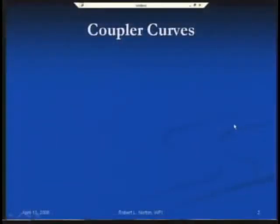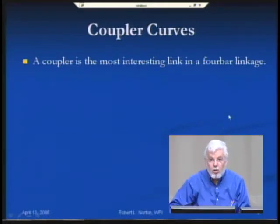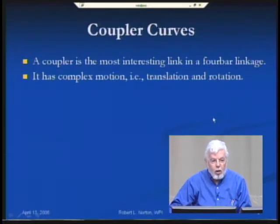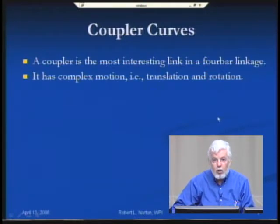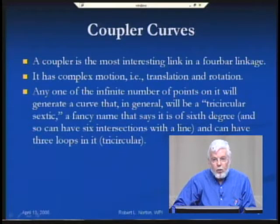Coupler curves are generated by what I think is the most interesting link in a four-bar linkage — not surprisingly called the coupler. It's interesting because it has complex motion: every point of that link is going through a combination of translation and rotation as the linkage moves, whereas the other two moving links — the crank and the rocker — have pure rotation.